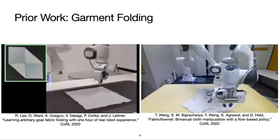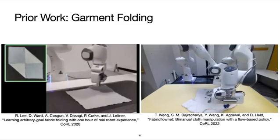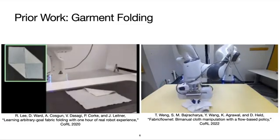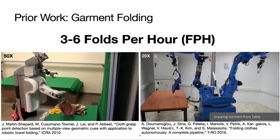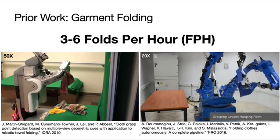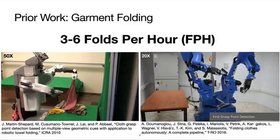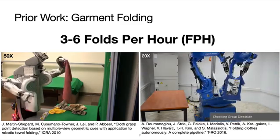For garment folding, prior works either focused on learning goal-conditioned policies, starting from a smooth fabric, or on heuristics that achieve high success rates, but had long cycle times, with a throughput of 3-6 folds per hour.